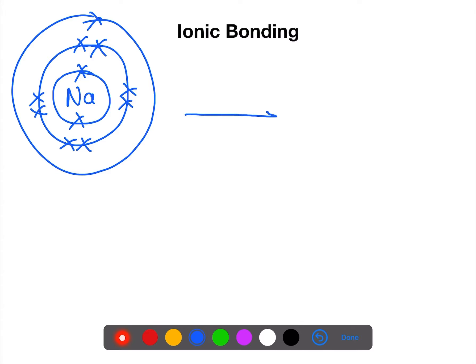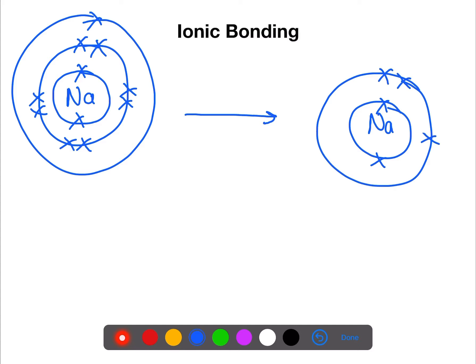Metals always lose their outer electrons to become positive ions. We've lost one electron, therefore this is a one positive ion.